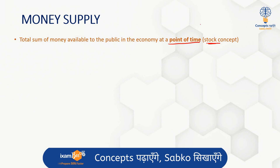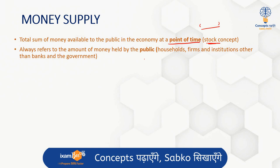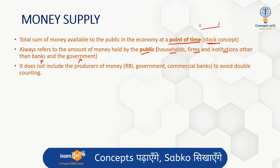A flow concept is something you measure over a period of time, but money supply is measured at a particular point of time. This money supply refers to the amount of money held by the public — households, firms, and institutions. These do not include banks and the government, because they do not include people who supply the money — RBI, government, and commercial banks — as including them would lead to double counting.